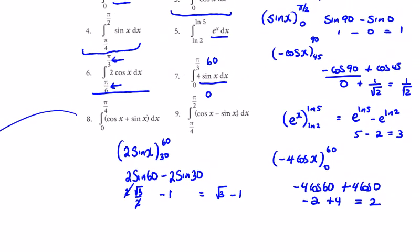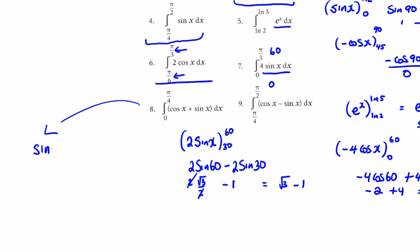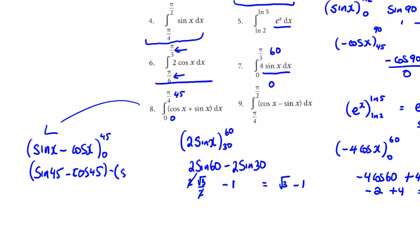For number 8, cos x integrates to sin x and sin x integrates to minus cos x. So the integral of cos x plus sin x gives sin x minus cos x, evaluated between 45 and 0. That gives sin 45 minus cos 45, minus sin 0 minus cos 0. The sin and cos of 45 are both 1 over root 2, so those cancel to zero, minus 0 minus 1, giving plus 1.